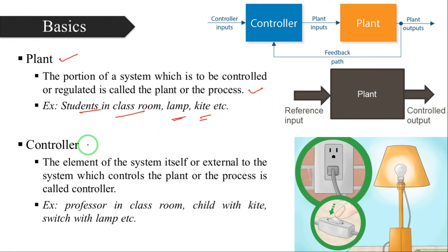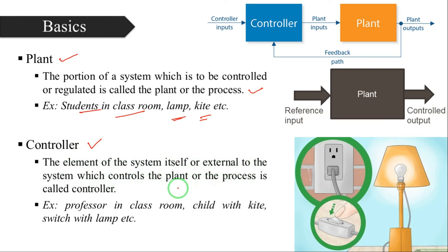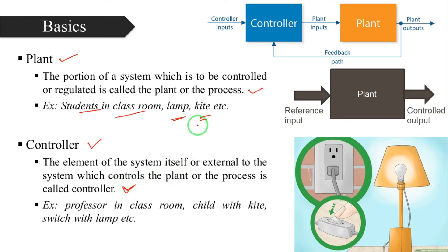Next, coming to the controller. A controller is the element of the system itself, or external to the system, which controls the plant or process. Simply, whichever element is controlling the plant or controlling the system is called the controller.